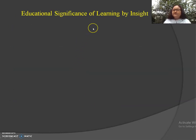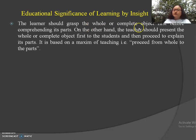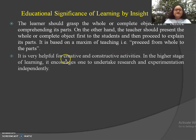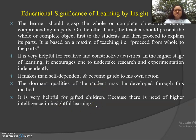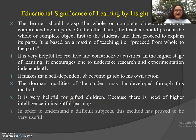The educational significance of learning by insight: the learner should grasp the whole or complete object first before comprehending its parts. The teacher should present the whole object first to students and then proceed to explain its parts — it is based on the maxim of teaching from whole to parts. It is very helpful for creative and constructive activities. In higher stages of learning, it encourages independent research and experimentation. It makes a person self-dependent and a guide to their own actions. The dormant qualities of students may be developed through this method. It is very helpful for gifted children, as higher intelligence is needed, and has proved very useful for understanding difficult subjects.